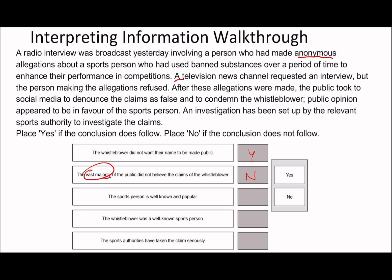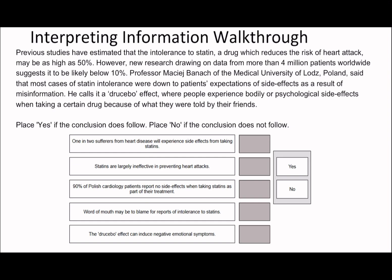Statement: 'The sports person is well known and popular.' I would say no — it doesn't say anything about whether they're well known or popular; it just says they're a sports person. Statement: 'The whistleblower was a well-known sports person.' Nothing is known about the whistleblower. Statement: 'The sports authorities have taken the claim seriously.' It says an investigation has been set up by the relevant sports authority to investigate the claim — so yes, I would agree that's true. Those two earlier ones just had no information to support them, and for the majority one, we were unable to conclude that.